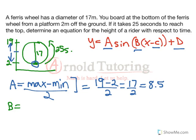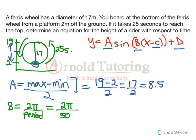'b' has to do with the timing. If we're dealing with radians, it's always 2π over the period of our function. The period is the time it takes to start repeating. In this case, it's 25 seconds all the way to the top, and then another 25 seconds back down to the bottom — so that's 50 seconds total. So b equals 2π over 50, which reduces to π over 25. That is our 'b' value.